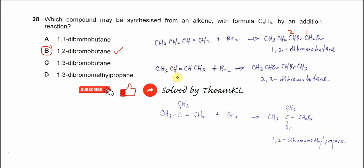For but-2-ene, after the bromine addition, it will form this compound. So the bromine will add to these two carbons and it will form 2,3-dibromobutane. There is no 2,3 here, so this one will not give the answers.